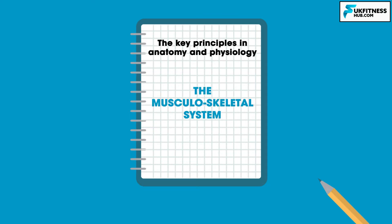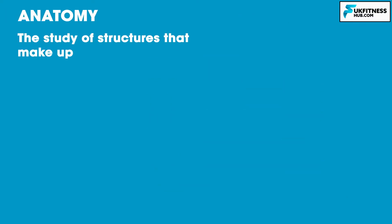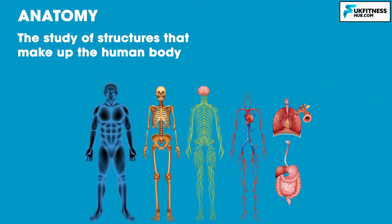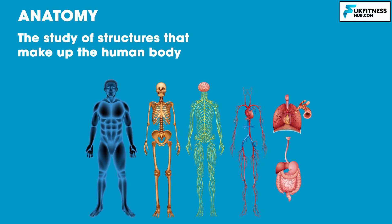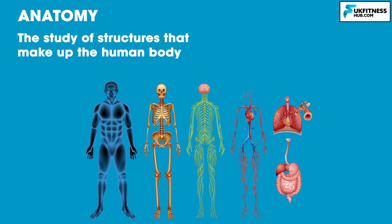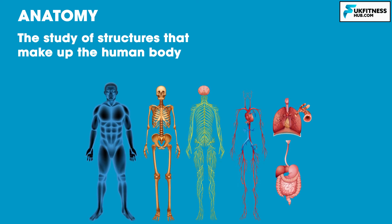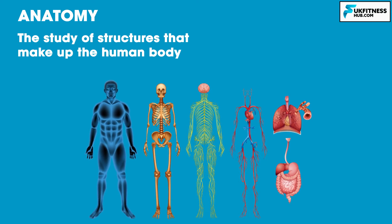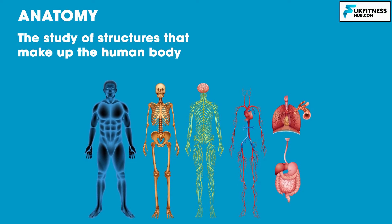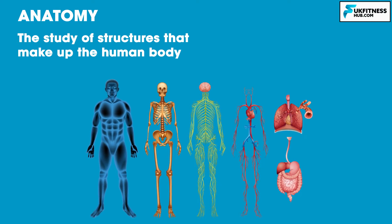Let's kick the video off by looking at two key terms: anatomy and physiology. What do these words actually mean and what's the difference between the two? Anatomy is the study of structures that make up the human body. In future episodes we'll be learning about the skeleton, heart, lungs and muscles, so in those lessons we're learning about the body's anatomy. Think of human anatomy as what makes up the body.